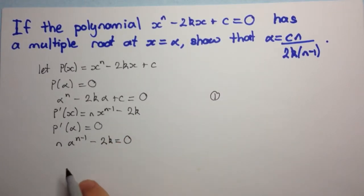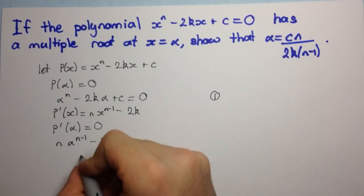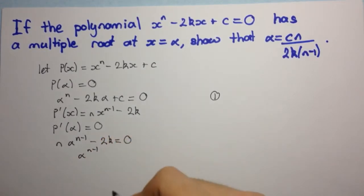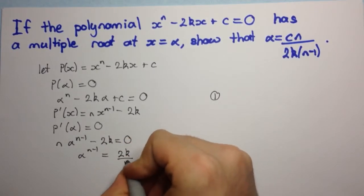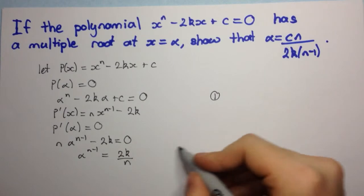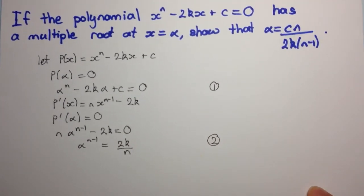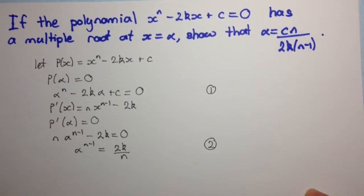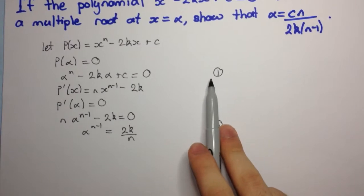We can rearrange this to get alpha to the n minus one equals 2k over n. Let's call this equation two.